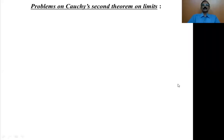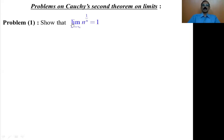Problems on Cauchy's second theorem on limits. Show that the limit of n to the power 1 by n as n tends to infinity is 1. That is, the limit of the nth root of n is 1.